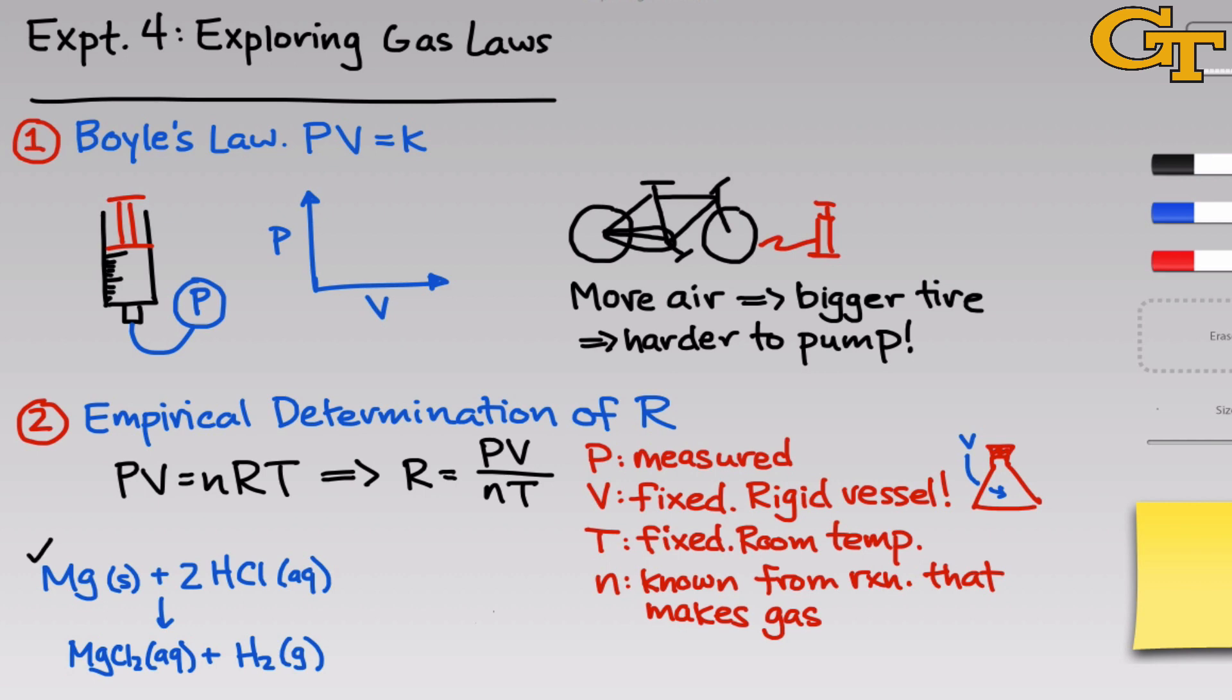Specifically, if we know the moles of magnesium that we added, which we will because we'll mass it, and we know the number of moles of hydrochloric acid we added, which again we will because we'll know its concentration and the volume of solution that we add, then a little bit of stoichiometry gives us the number of moles of hydrogen that should be generated, assuming the reaction goes to 100% completion, which is a fine assumption in this case.